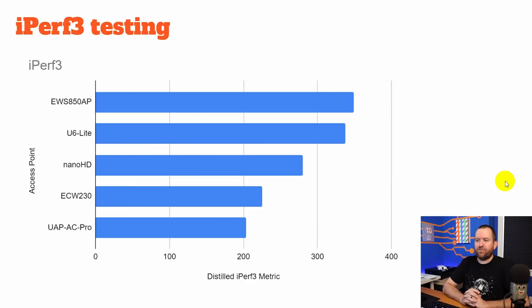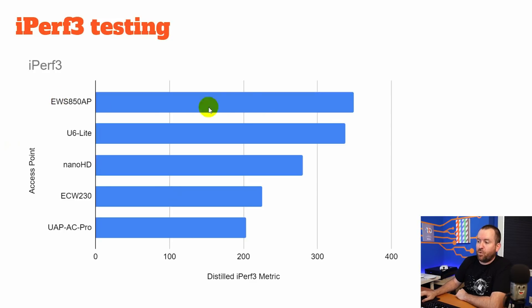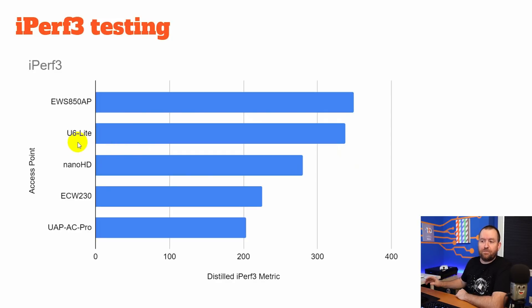And here is what we ended up with. Coming out on top was the EWS850AP from Ingenious — that outdoor 2x2 multi-user MIMO access point — at about 350 megabits per second in the combined iPerf averages. Coming in a close second was the U6 Lite, also a 2x2 multi-user MIMO setup. I think the EWS850AP has a bit better gain on the antennas, plus the external antennas gave it the edge in this test.